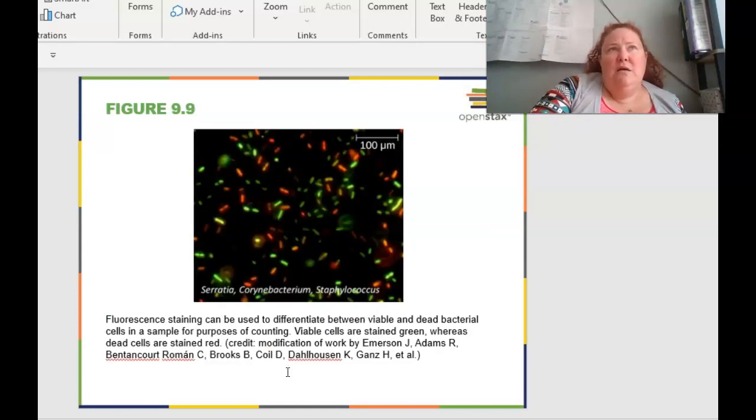You can also do fluorescent staining, and this can be used to differentiate between viable and dead bacteria cells if we're counting. And so in this example, the viable or the alive cells are stained green, whereas the dead cells are stained red. What did I used to use? Methylene blue, bromophenol blue. It was a blue dye of some sort. I can't remember if I remember. I'll tell you guys in lecture. But it was really cool because basically, if the cells were alive, it could keep the blue dye out of the inner part of the cell, where if the cells were dead, then that membrane was no longer maintainable. And so it would allow the dye to permeate or go inside.